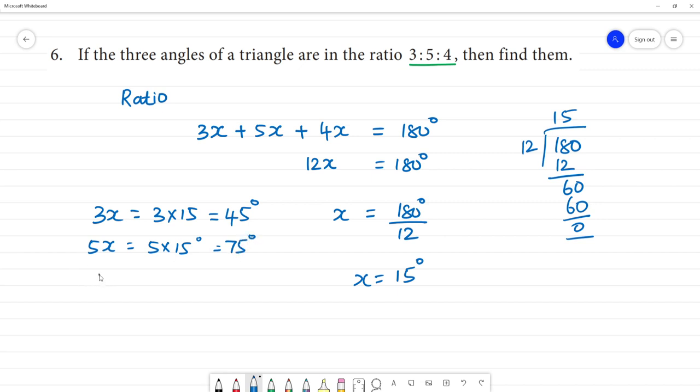Then, 4x, 4x equal to 4 multiplied by 15. That is equal to 60 degree.